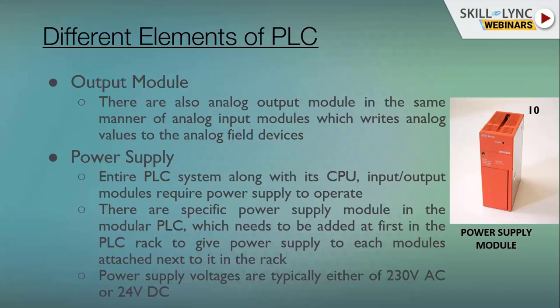Every electrical component requires a power supply to operate. We have a dedicated power supply module that supplies current to the CPU and other I/O modules. The power supply module can be on the leftmost or rightmost side in a modular PLC, or sometimes in the middle. Power is sent via the rack or chassis to the other units and modules. Most power supplies are either 230V AC or 24V DC.